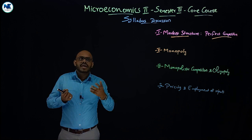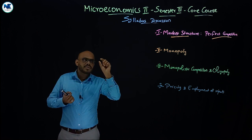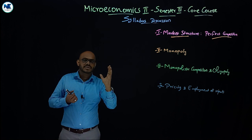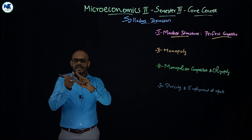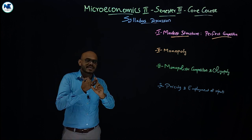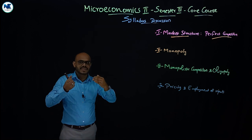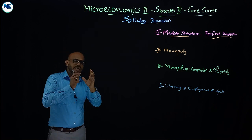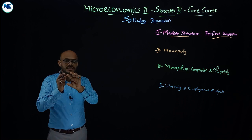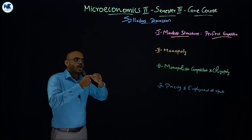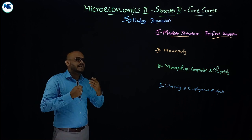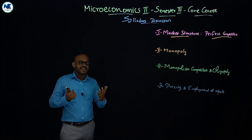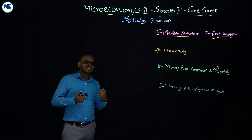In the next module we need to focus on average revenue, marginal revenue, average cost system, marginal cost system, and the firm and industry. The concepts include short-run equilibrium of the firm, short-run equilibrium of the industry, long-run equilibrium of the firm, and long-run equilibrium of the industry.